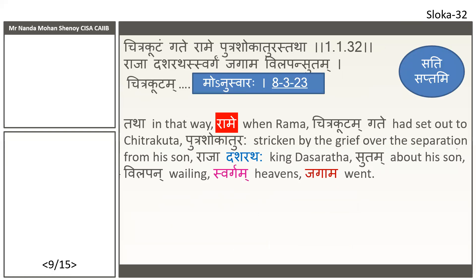There is also the compound word 'Putra-shokaturastada' — that is one word. 'Dasaratha Sorgam' is also the same thing. 'Vilapan Sutham' — specific usage. 'Tatha Rame Chitrakutam Gate Putra-shokaturaha Raja Dasarathaha Sorgam Jagama.' The principal clause is 'Dasarathaha Sorgam Jagama' — King Dasaratha went to heaven, meaning he passed away.